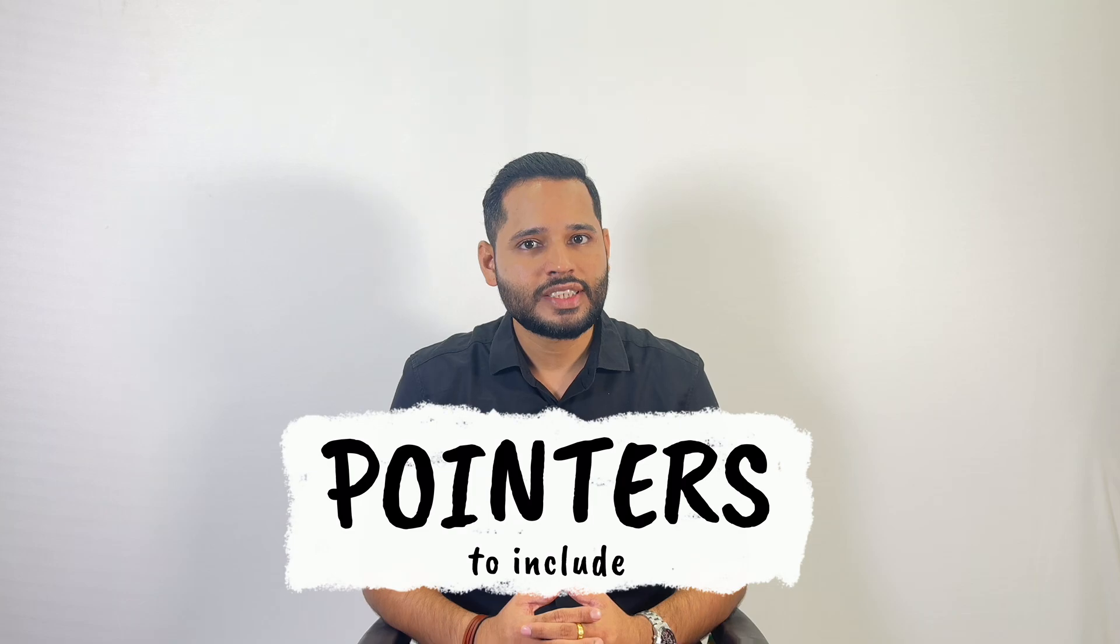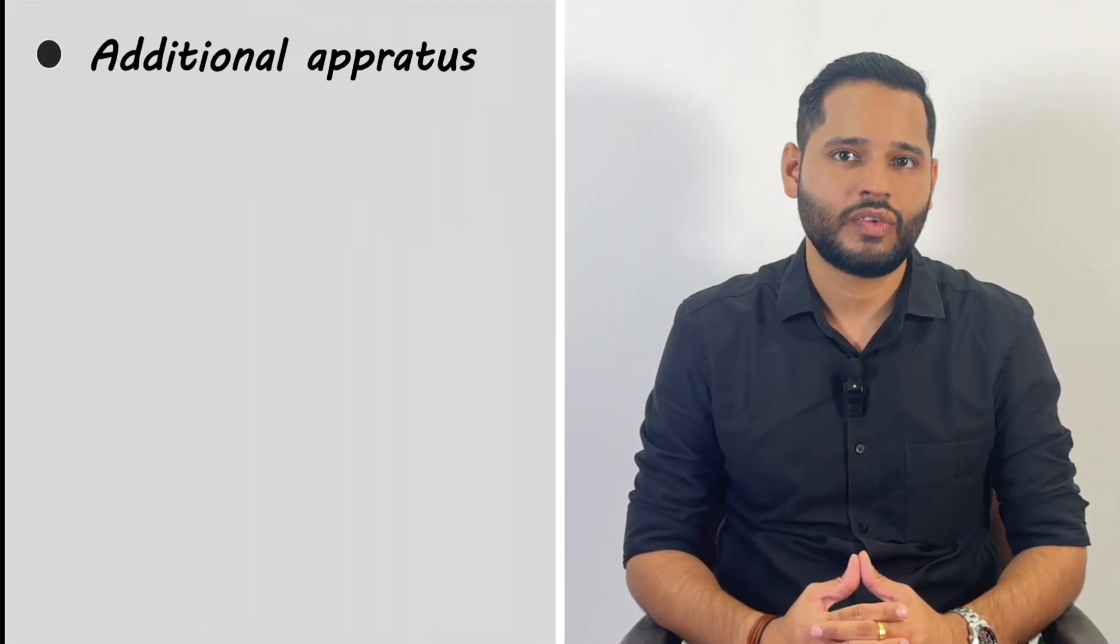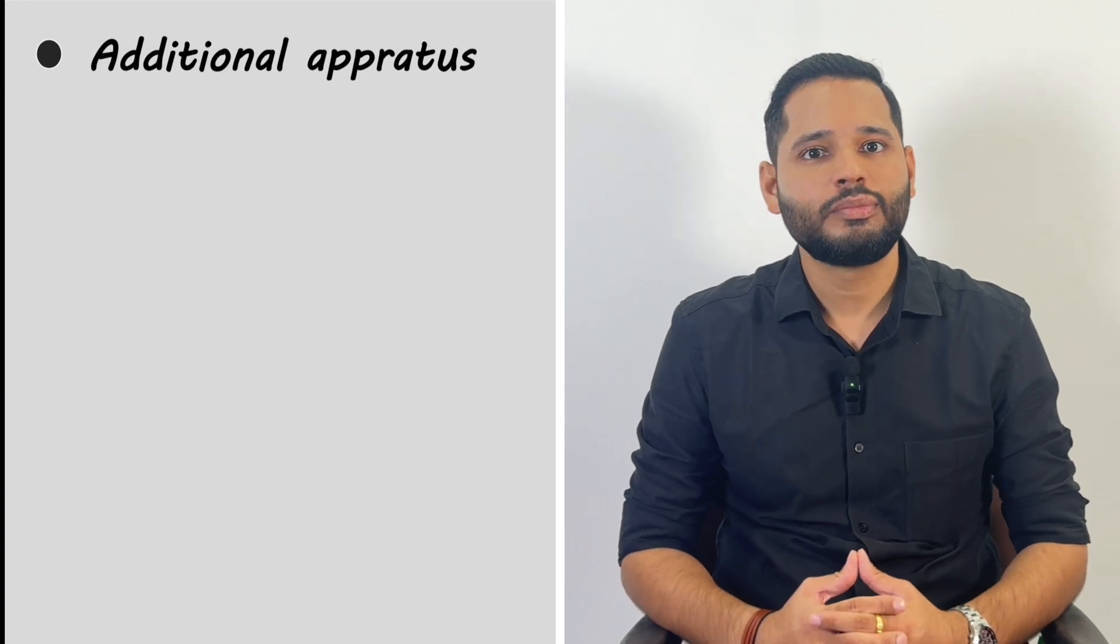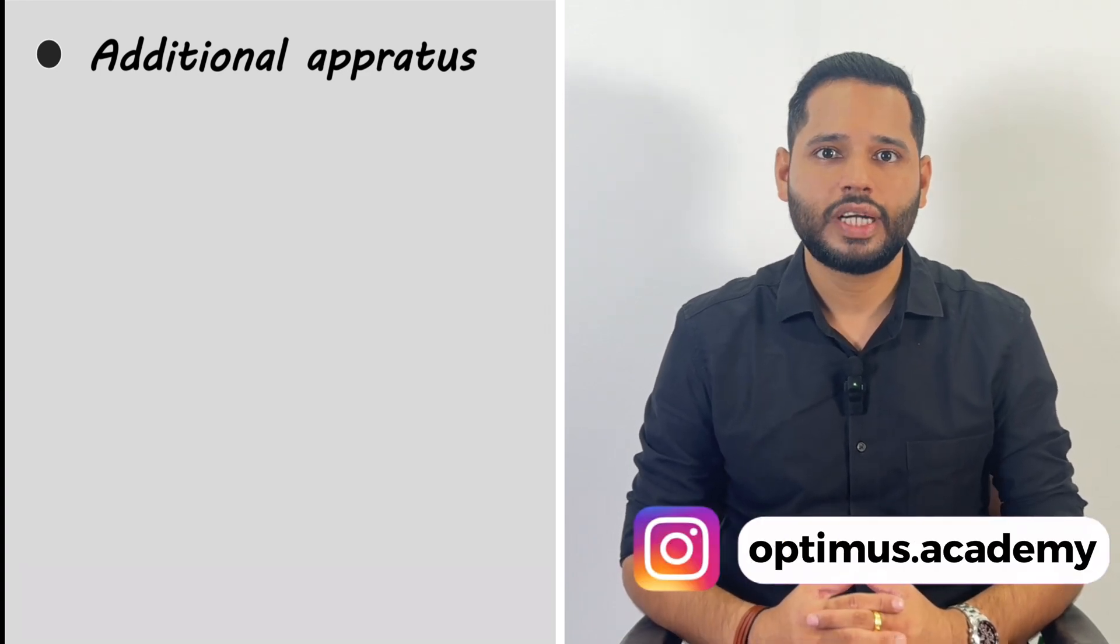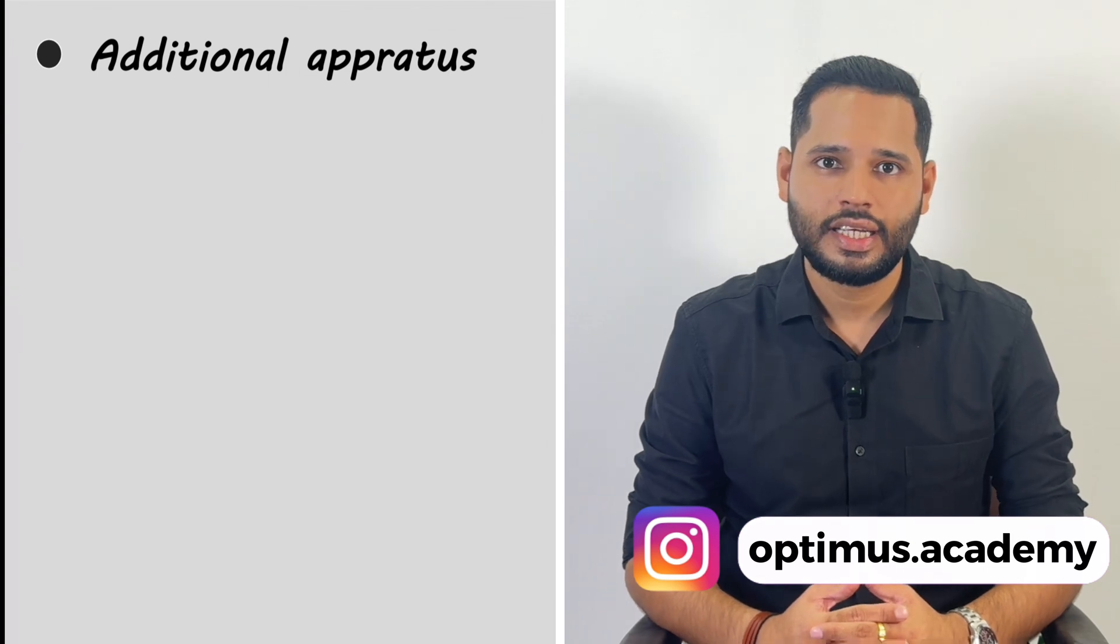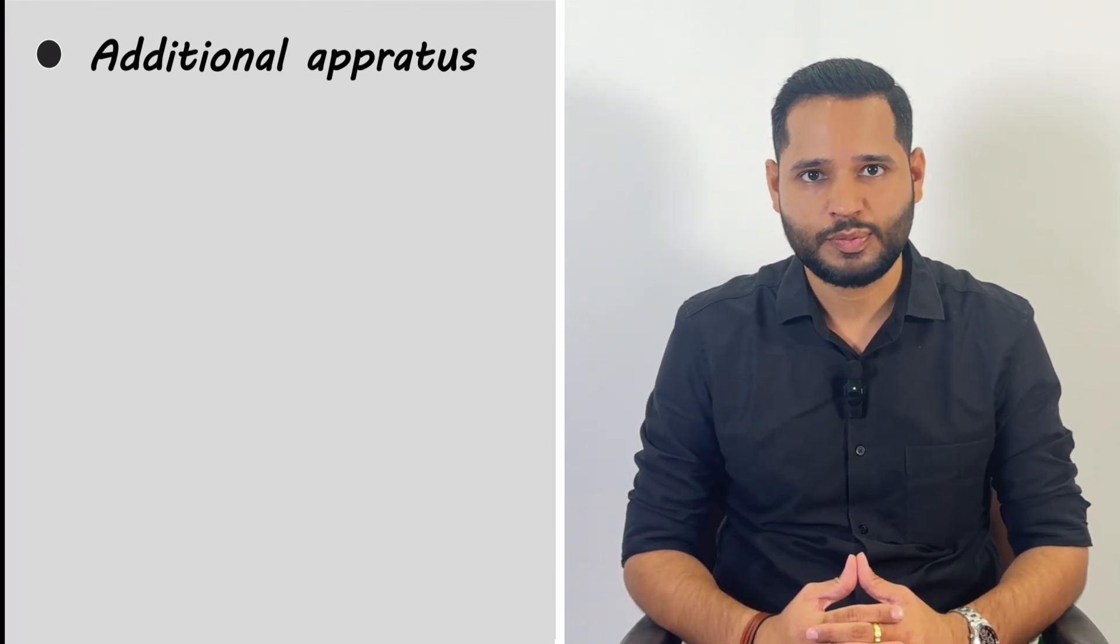What pointers are we supposed to include in the answer? The first one is any additional apparatus required. So they will give you some list of apparatus for the experiment, but over and above, if you need any additional apparatus, then that must be included in this pointer.